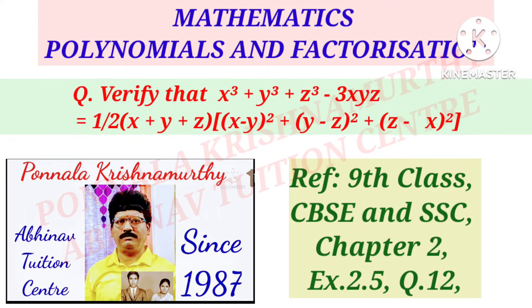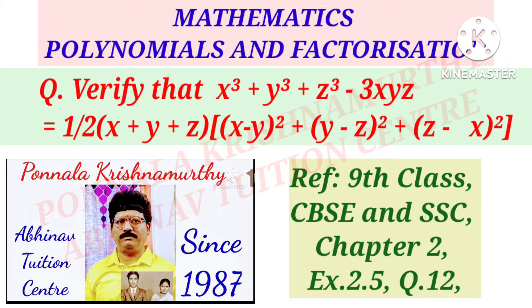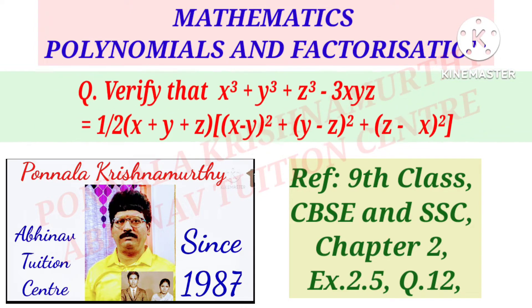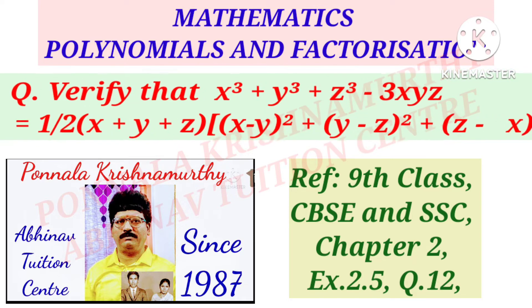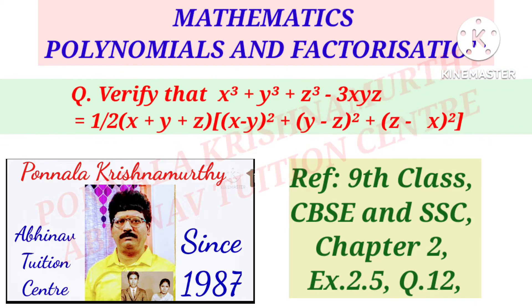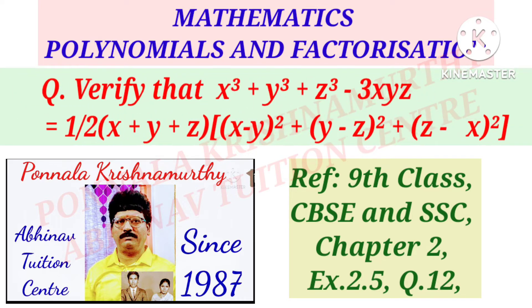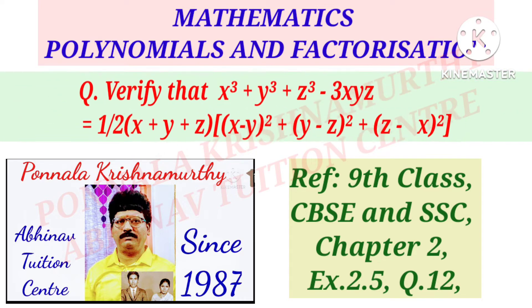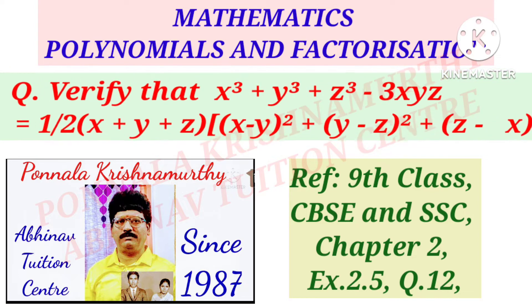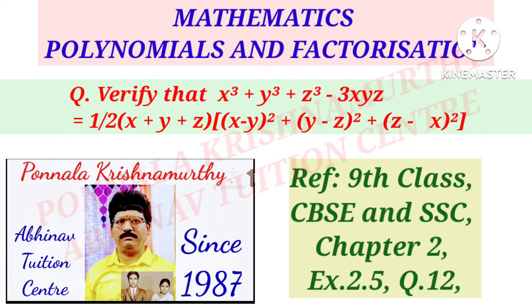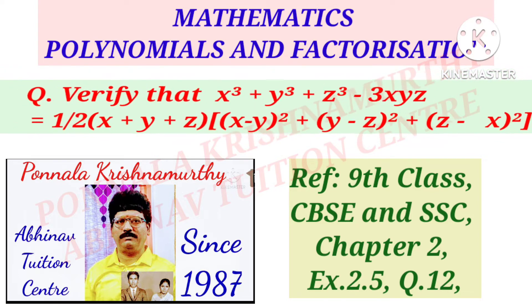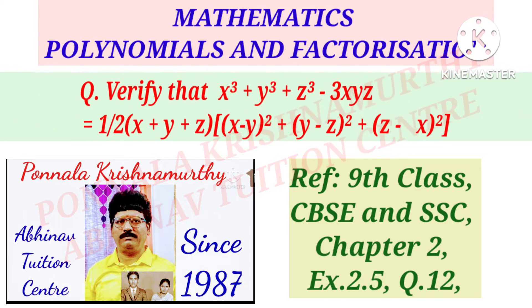Verify that x³ + y³ + z³ − 3xyz is equal to 1/2 into (x + y + z) into [(x − y)² + (y − z)² + (z − x)²].